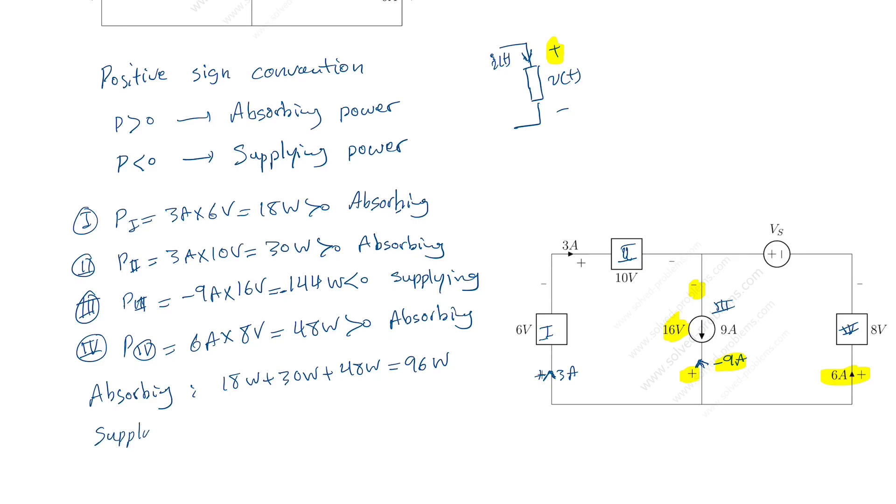How much supplying do we have? We have 144 watt supply. So unknown is Vs. So what do you think? Is it supplying or absorbing? To add up, we need Vs. The power of Vs must be 144 minus 96 and the value is 48 and that's absorbing.